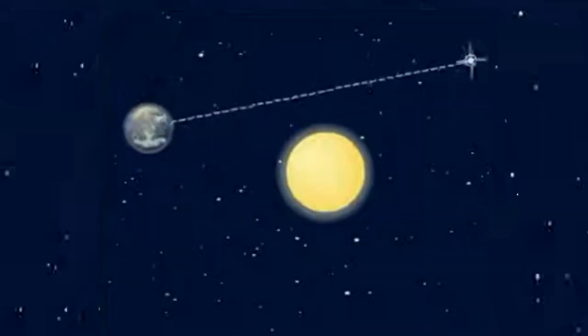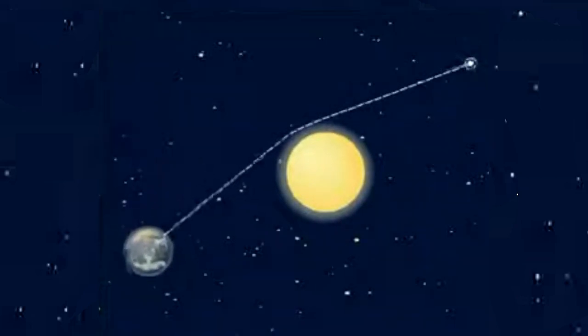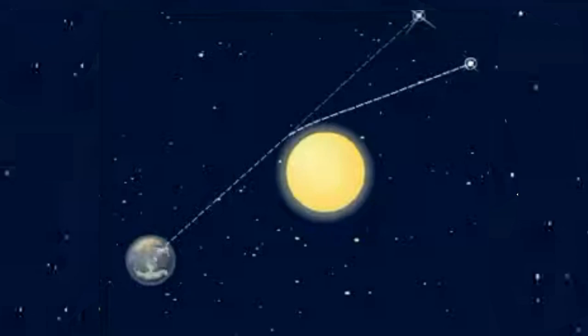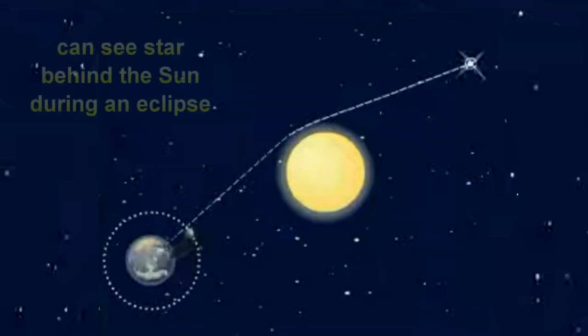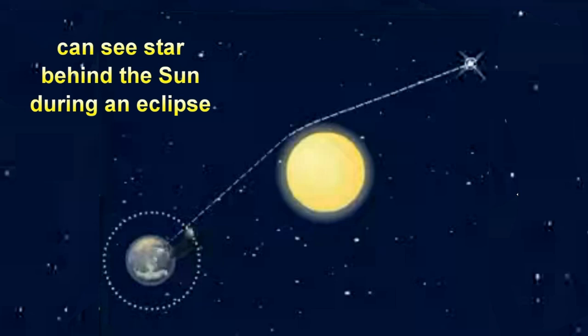Let's go with one of the first tests: light bending. Here is the illustration. You can see a star behind the sun during an eclipse. You can see the light of that star, so you say: light must have bent around the sun and the moon and come to your eye.